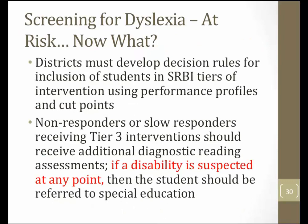Once you've screened your student and identified that he or she is at risk, what do we do next? Districts will need to develop decision rules for inclusion of students in SRBI tiers of intervention using performance profiles and cut points — for example, at what point do you advance a student directly to Tier 3 for intervention? Non-responders or slow responders receiving Tier 3 interventions should receive additional diagnostic reading assessments. If a disability is suspected at any point, a student should be referred to special education. We'll post resources to the CERC website to assist districts in developing cut points and decision rules.